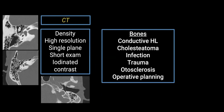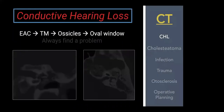The inner ear and otic capsule are very dense, sclerotic bone, giving us great detail of that bony anatomy. Clinically, CT is ideal for conductive hearing loss, cholesteatoma, infection, trauma, otosclerosis, and operative planning. I'm going to go through each briefly — these topics each deserve their own hour-long lecture, but I just want to touch on certain clinical scenarios and why these modalities are suited for them.